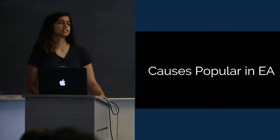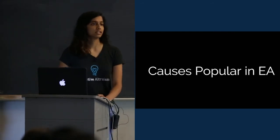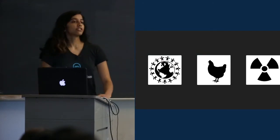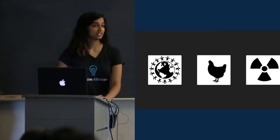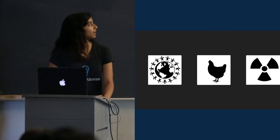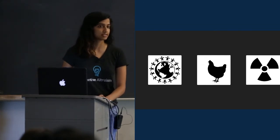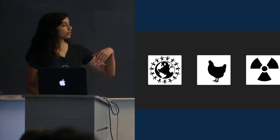So let's look at some of the causes that are very popular in the effective altruism movement. Here are the three causes. Global poverty, animal welfare, and reducing existential risk or global catastrophic risk.